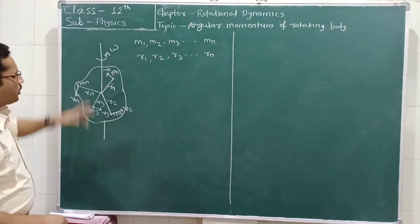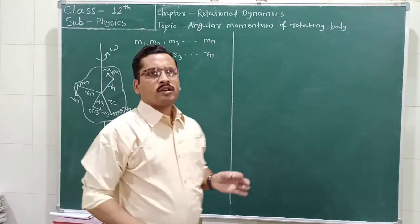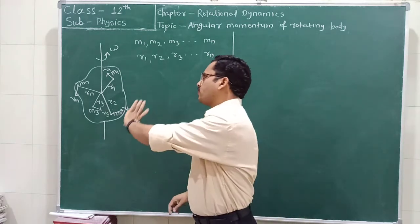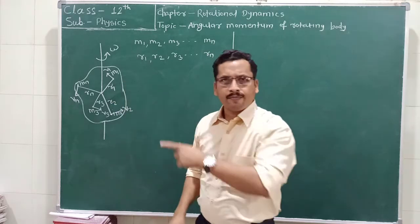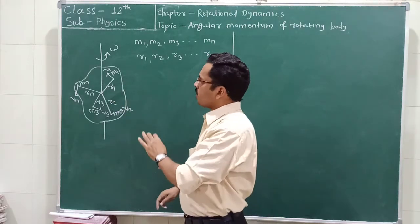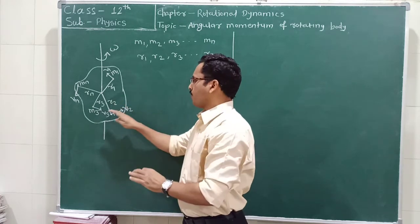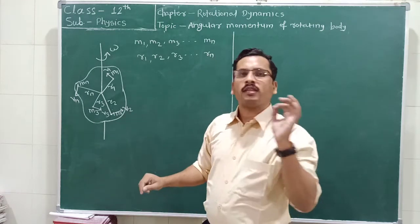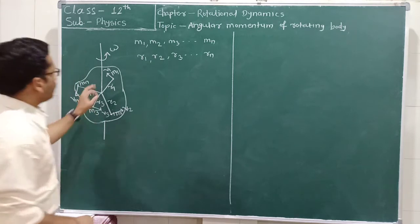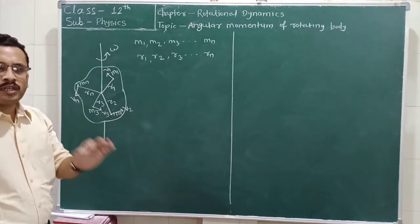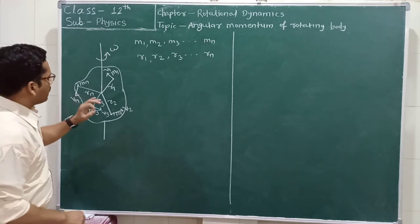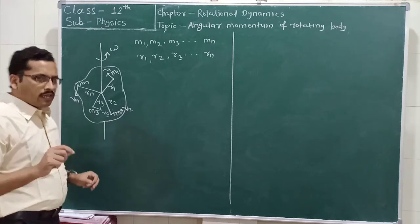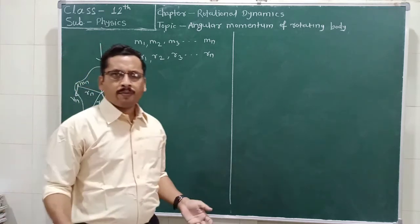This whole body is rotated with an angular velocity omega. The angular velocity of the whole body is the same. Therefore, the angular velocity of each particle M1, M2, M3, Mn remains the same. But the linear velocity of each particle will be different, because the distance of each particle from the axis of rotation is different.